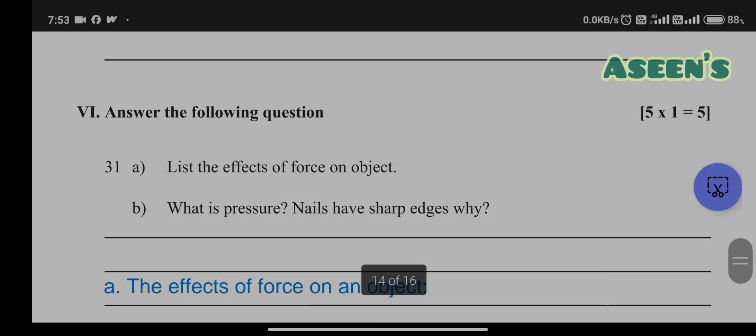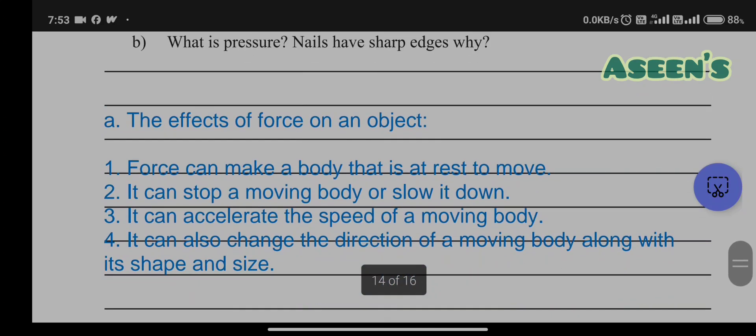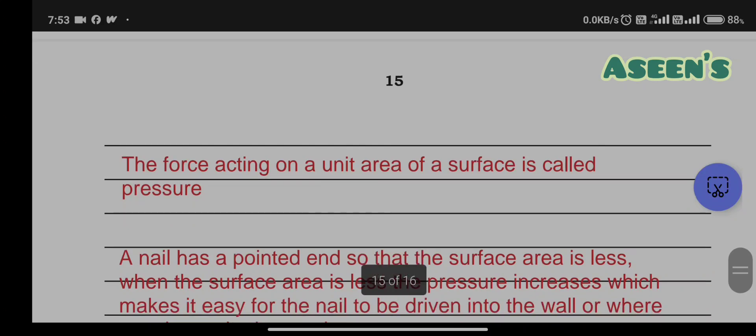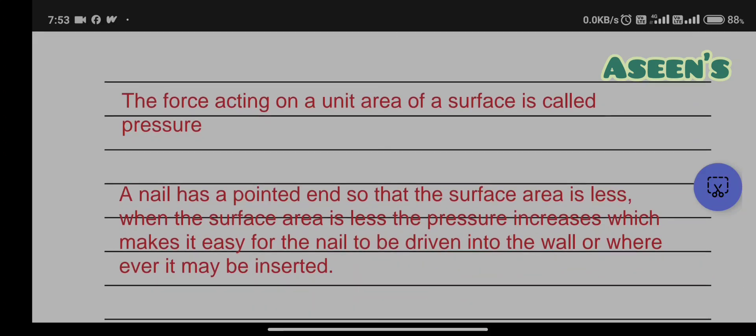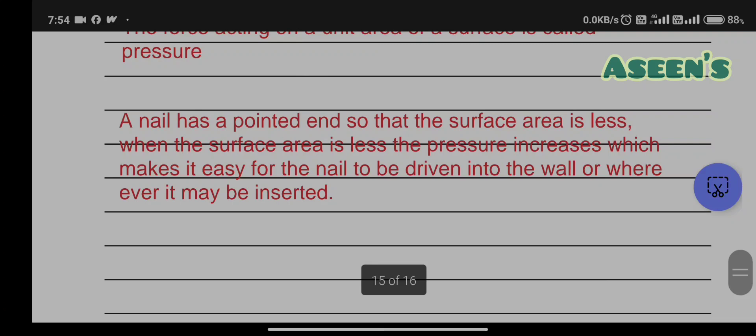Last question 31, 5 marks: List the effects of force on an object. What is pressure? Why do nails have sharp edges? Effects of force: force can make a body at rest move, can stop a moving body or slow it down, can accelerate the speed of a moving body, can change the direction of moving body along with its shape and size. Pressure is force acting on a unit area of a surface. A nail has a pointed end so that surface area is less. When surface area is less, pressure increases, which makes it easy for the nail to be driven into the wall or wherever it may be inserted.